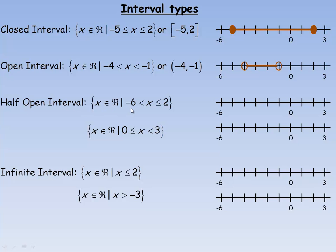A half open interval means one end is closed and one is open — you include one endpoint but not the other. In the first example, we include 2 but are only greater than negative 6, so the interval goes above negative 6 up to and including positive 2. In another example, X is greater than or equal to 0 but less than 3: we include 0 with a solid dot, but 3 is excluded with an open bracket — it must be strictly less than 3.